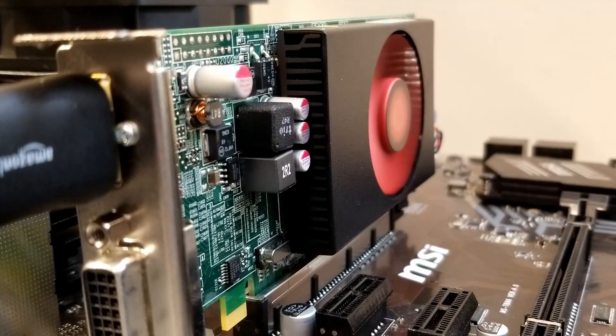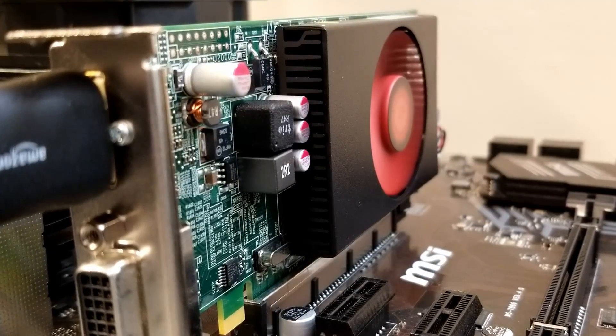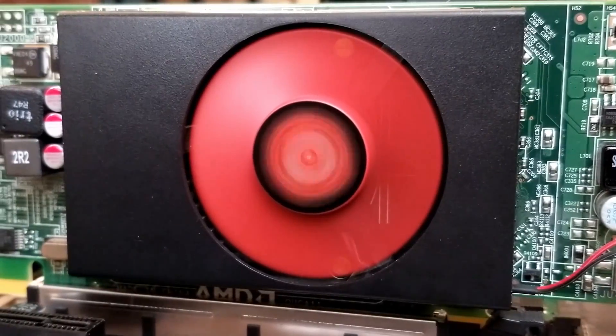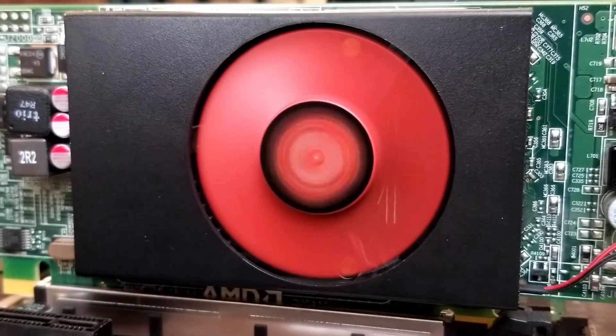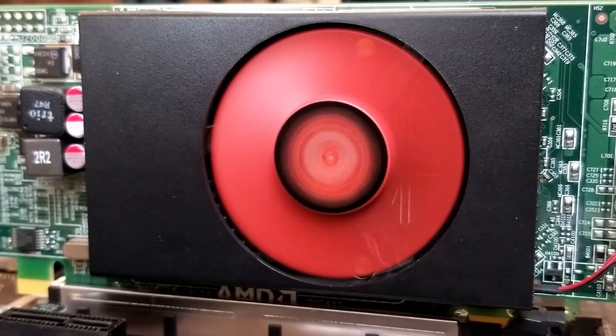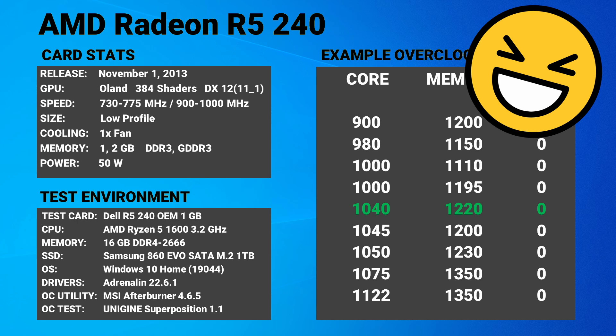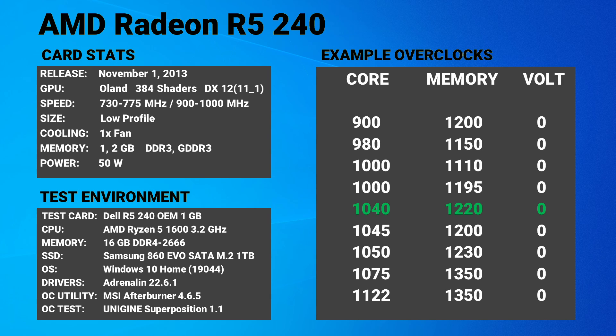So how did our test card do with overclocking? After a couple dozen tests, this particular card was able to reach a solid overclock of 1040 megahertz core clock and 1220 megahertz memory clock. This seems quite good and fits well within the range of the other example overclocks for this card.